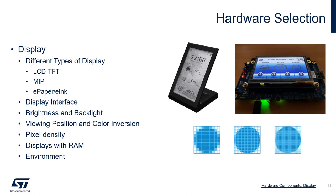The pixel density of the display is also a factor. You can have a big physical display with a low resolution and therefore a low pixel density. With a low pixel density you have large pixels that may give jagged edges around elements in your graphics, while a high pixel density gives smoother edges. As shown with the circle example, graphics change significantly depending on pixel density.